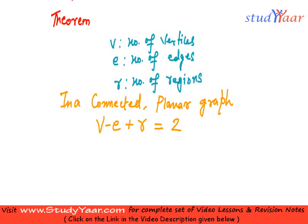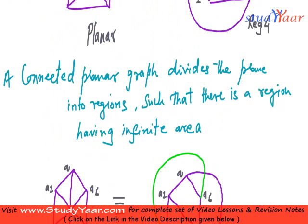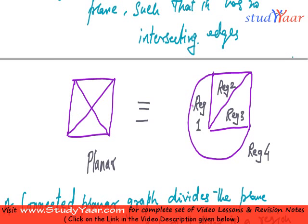Now let us check out a particular theorem related to a planar graph. In a connected planar graph, the number of vertices minus the number of edges plus the number of regions is always equal to 2. So let us check it out for a graph which is planar — this is the planar graph we have already seen before — and see if this equation holds.